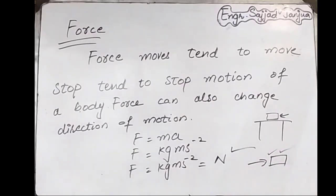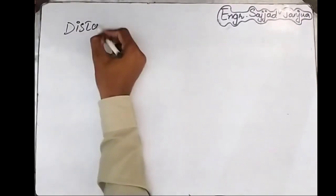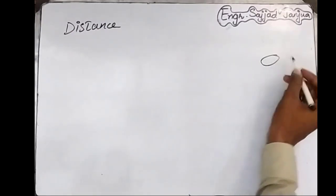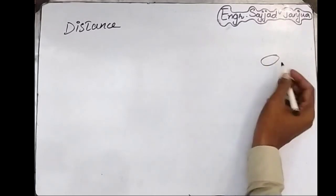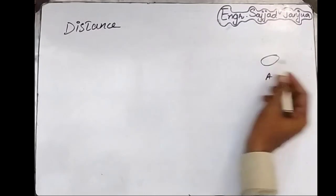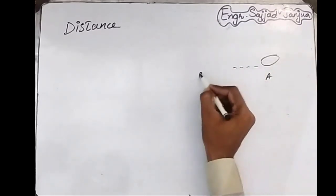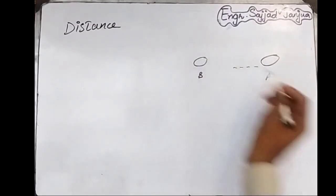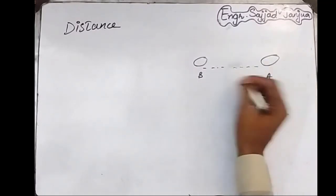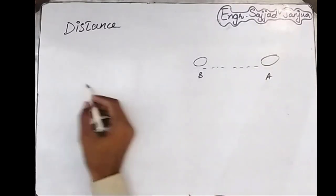Next we will discuss distance. Consider an example: we have a body at point A, and it will travel or move to point B. This body covers a path, and the total length of this path is called distance.